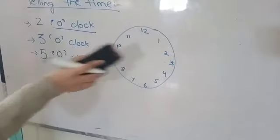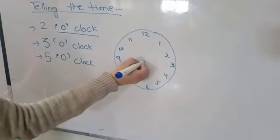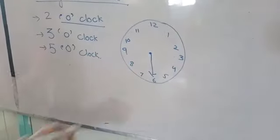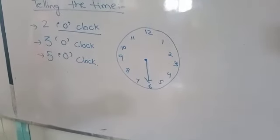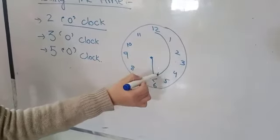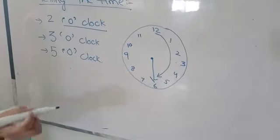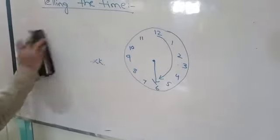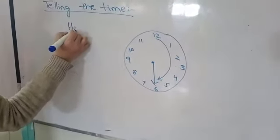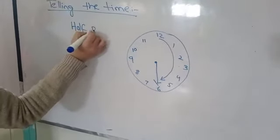Now again, if long hand is on six, it means that it covers half of the circle. So we can write it as half past.